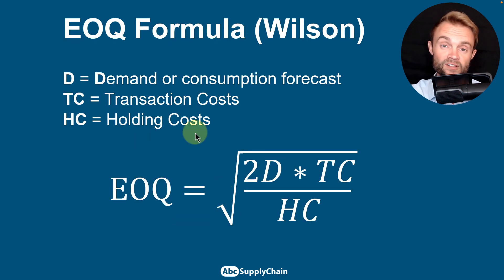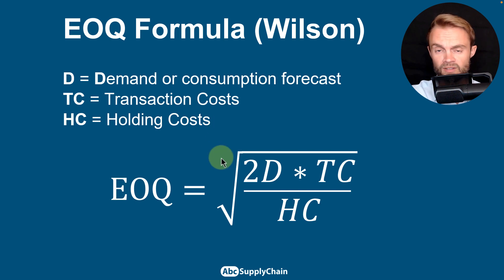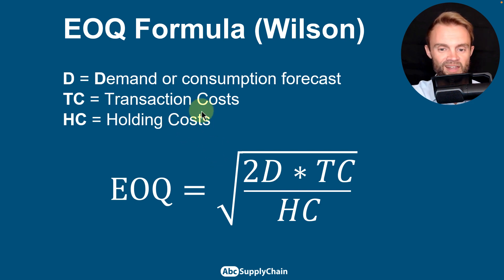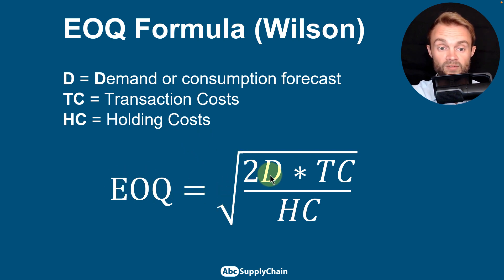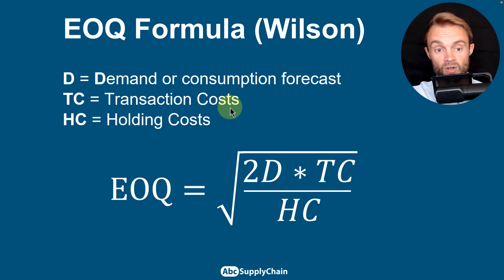To find this balance point, we use the EOQ formula — also called the Wilson formula. It's not complex at all: EOQ equals the square root of two times the demand, multiplied by the transaction cost, divided by the holding cost.